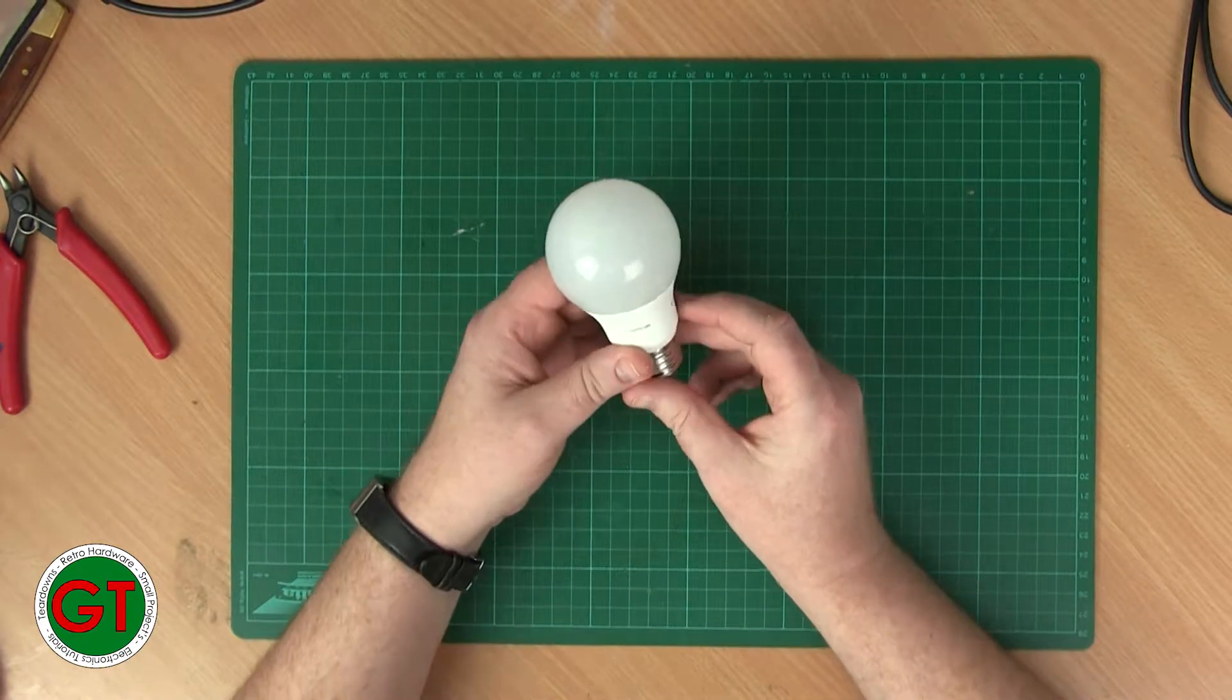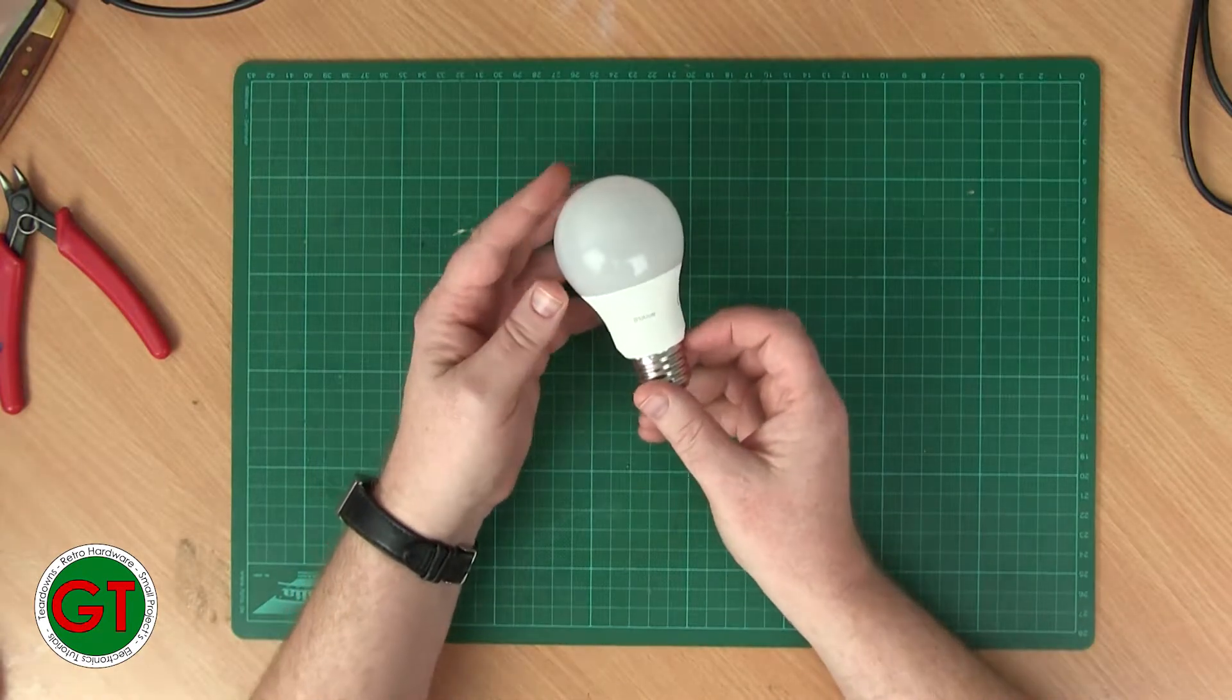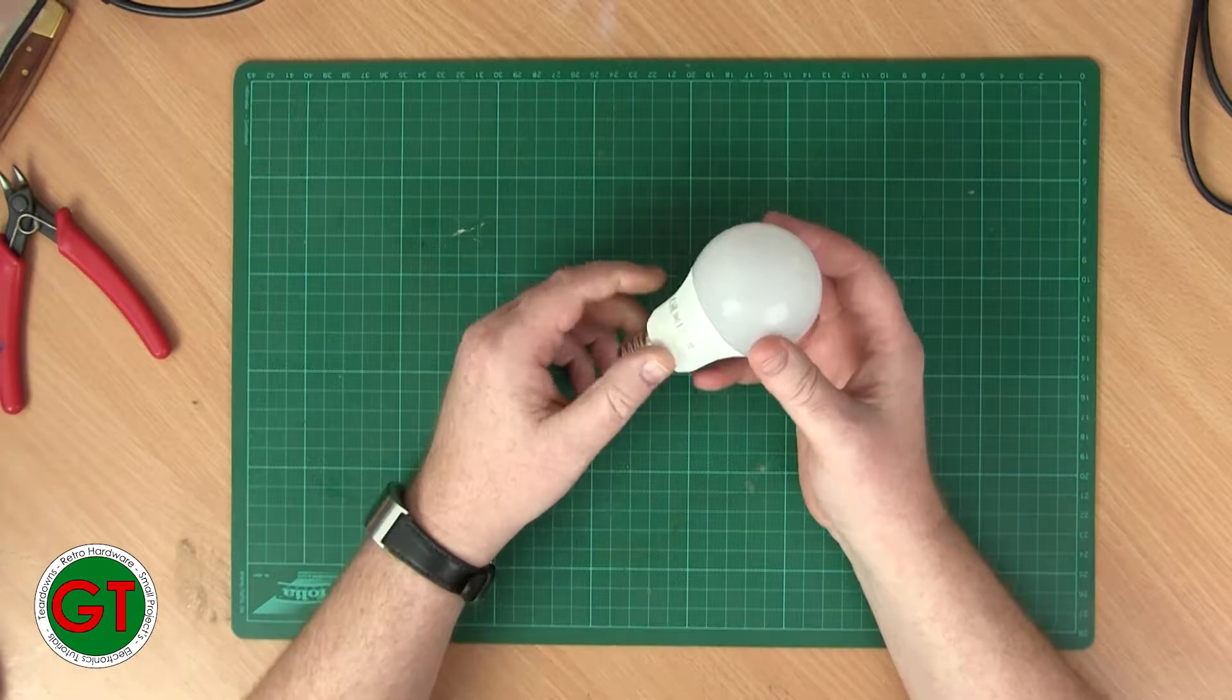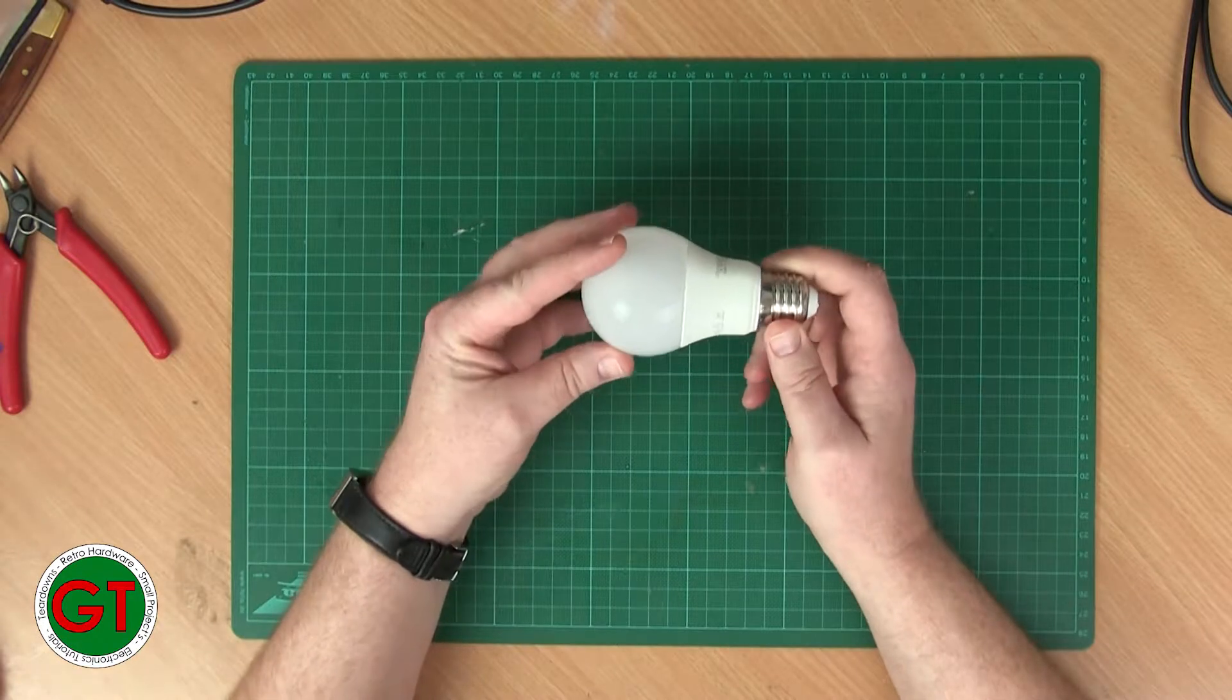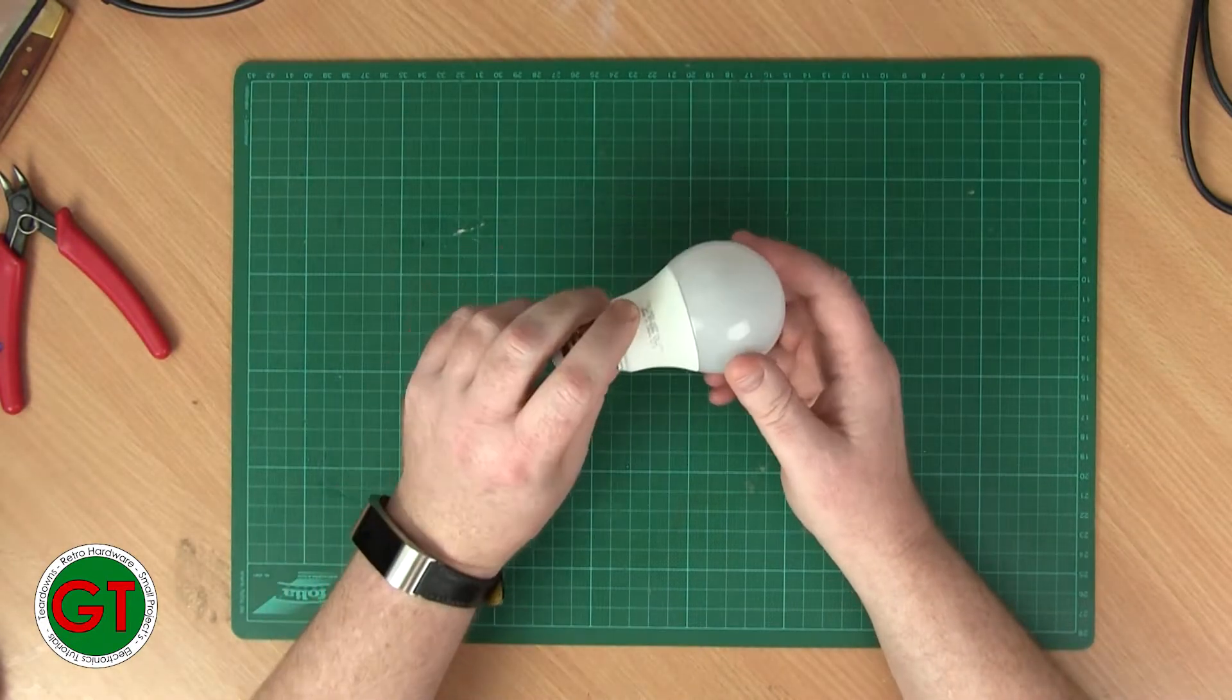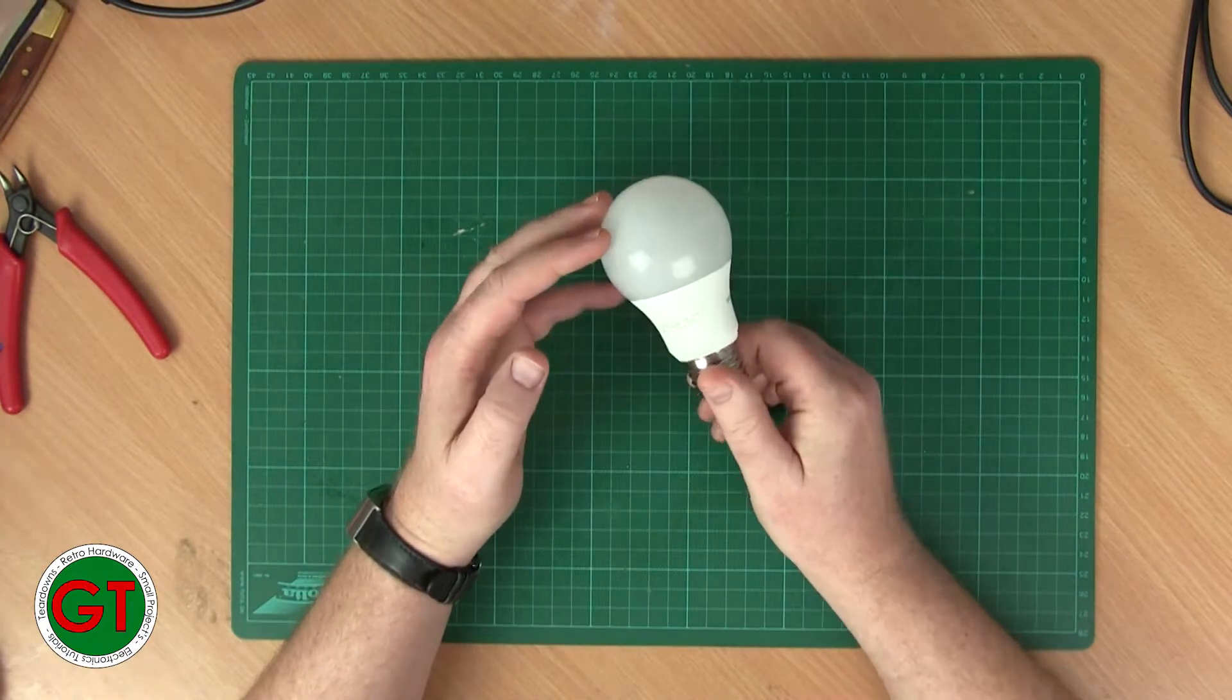Osram did reply to me quite promptly and informed me that they don't actually make these lamps - they're made under license by a company called LED Vans. I contacted them with the same question and just got a generic answer back, basically telling me to take them back to where I bought them from and ask for a replacement. For that I'd need a receipt, and let's face it, who buys a pack of bulbs for like 10 euros and then keeps the receipt?